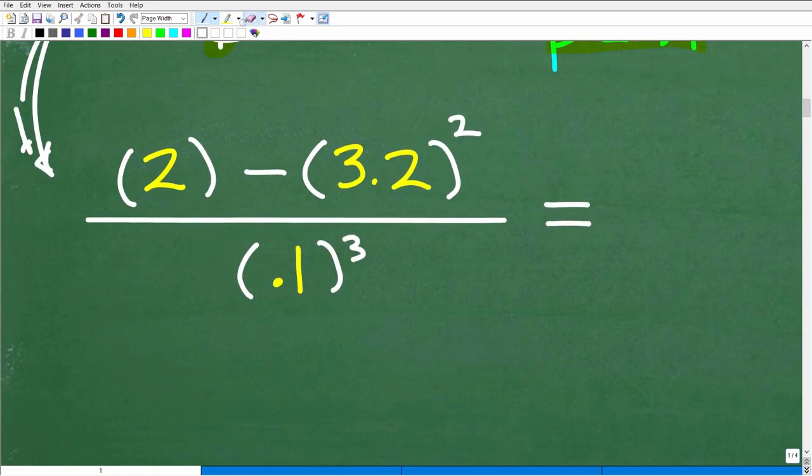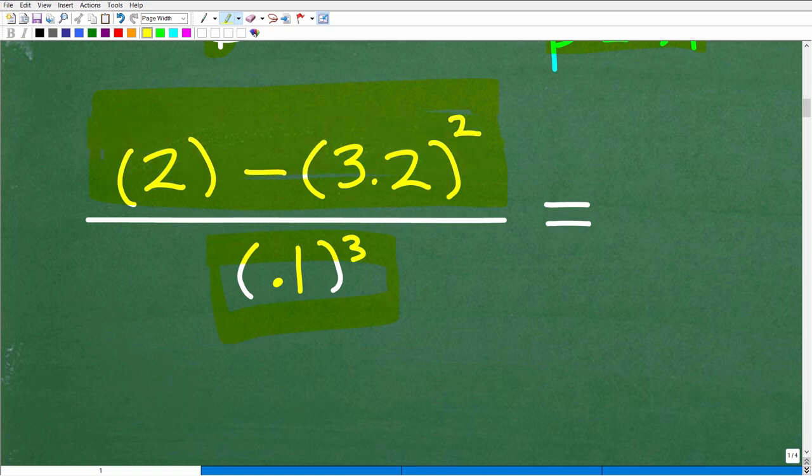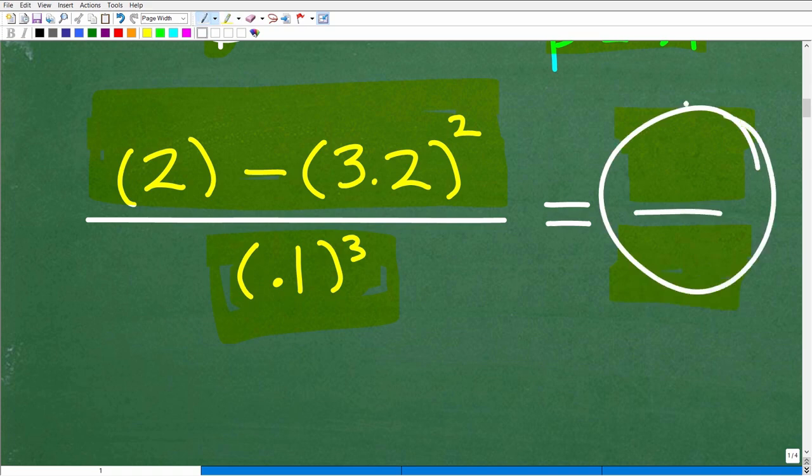So now that you feel good about that, let's talk about what to do next. Here we have 2 minus 3.2 squared over 0.1 cubed. What we got is a big fraction. So we have a numerator and a denominator. You want to break these up separately. So let's focus first on simplifying the numerator. We'll get a value for that, then we'll figure out what the denominator is, get that value, and then finally, divide those two values.